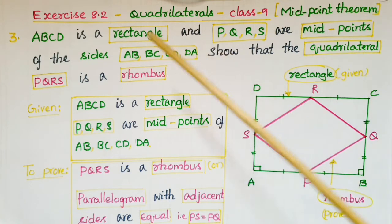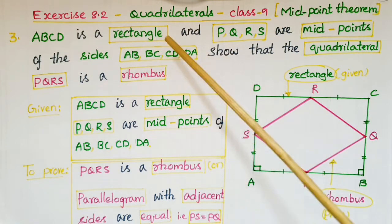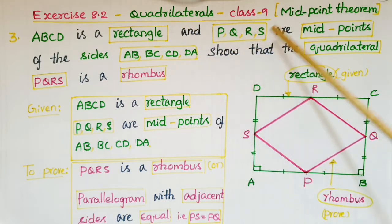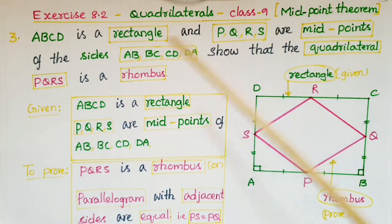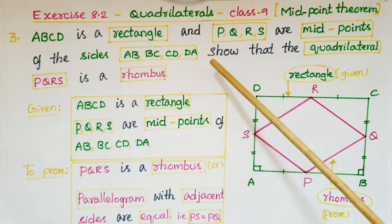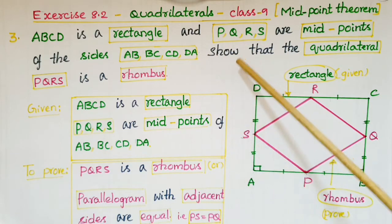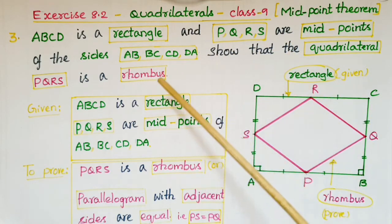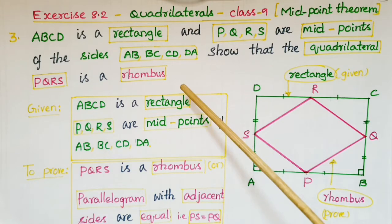In this problem, ABCD is a rectangle and P, Q, R, S are midpoints of the sides AB, BC, CD, and DA. Show that the quadrilateral PQRS is a rhombus.